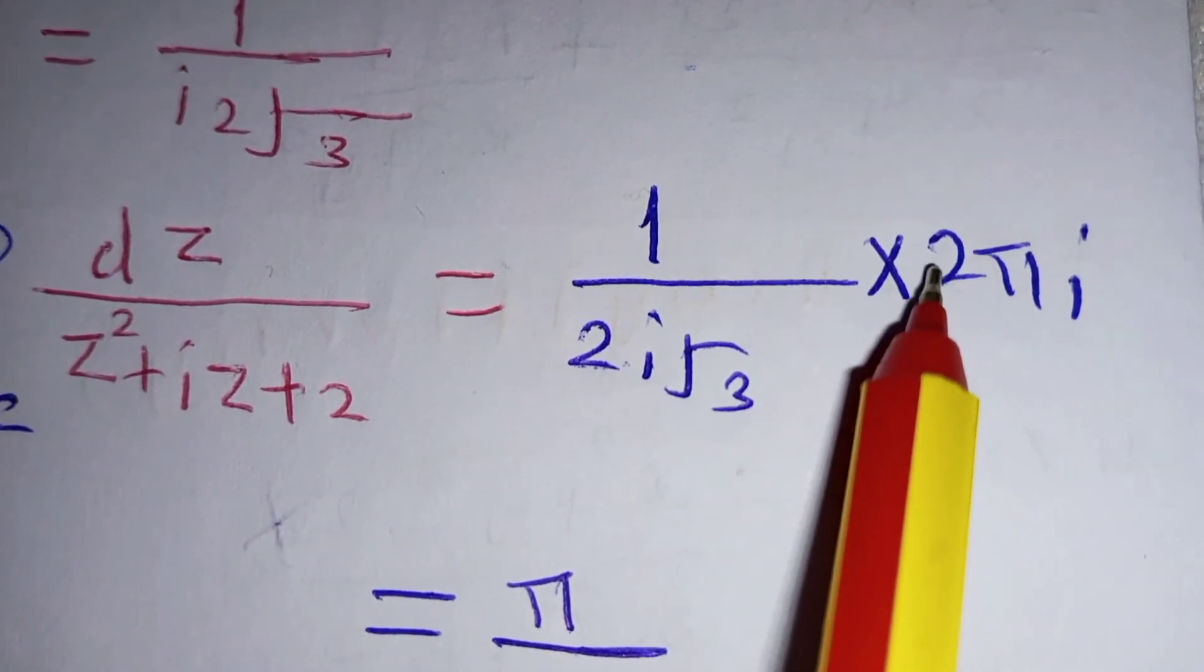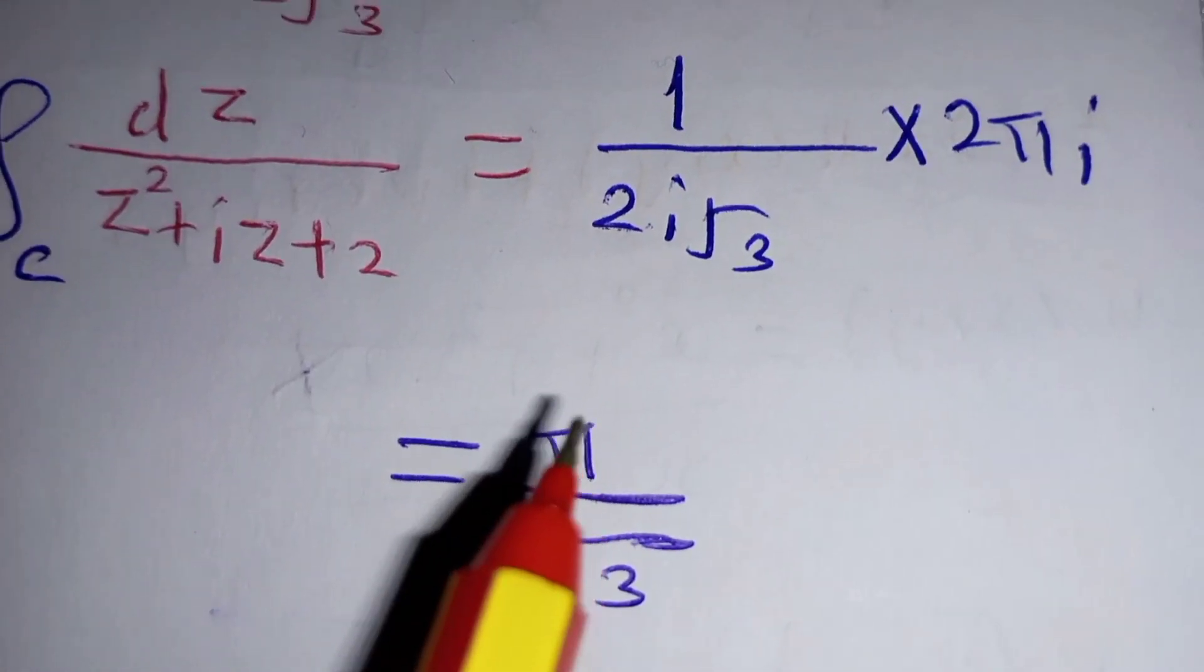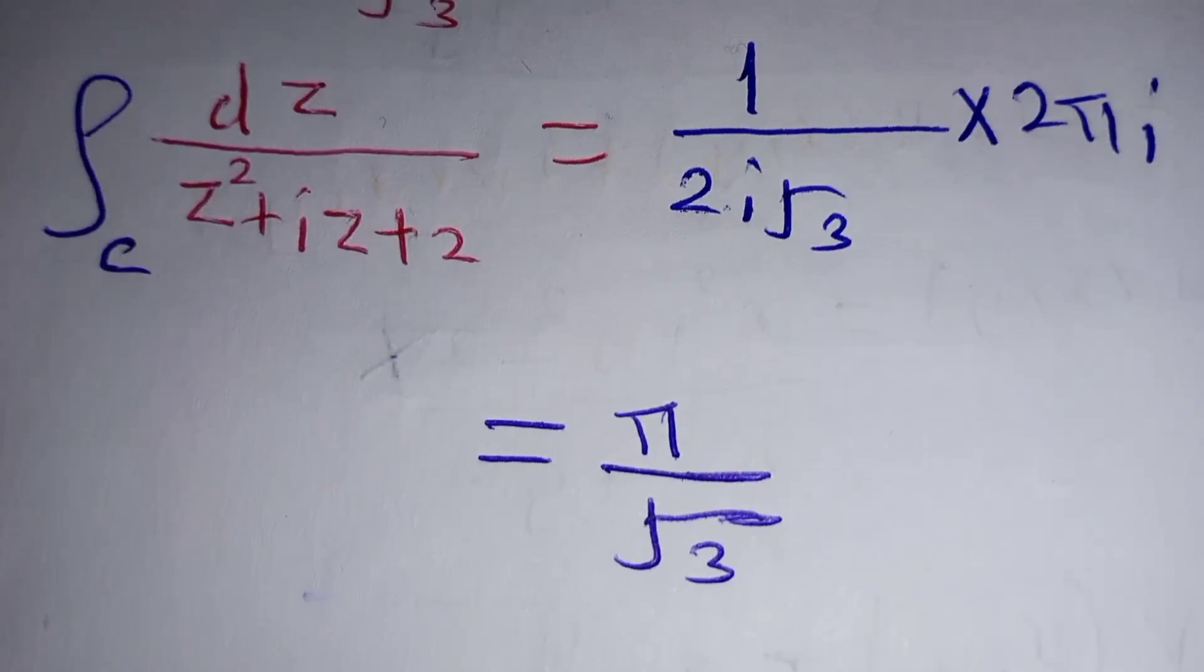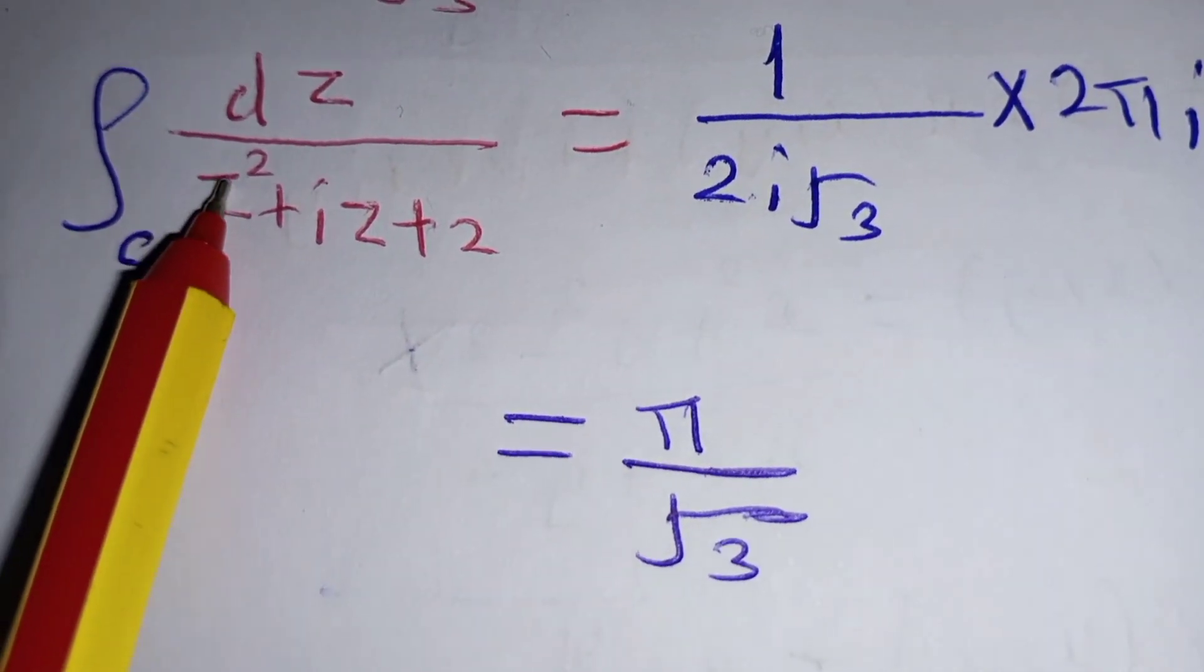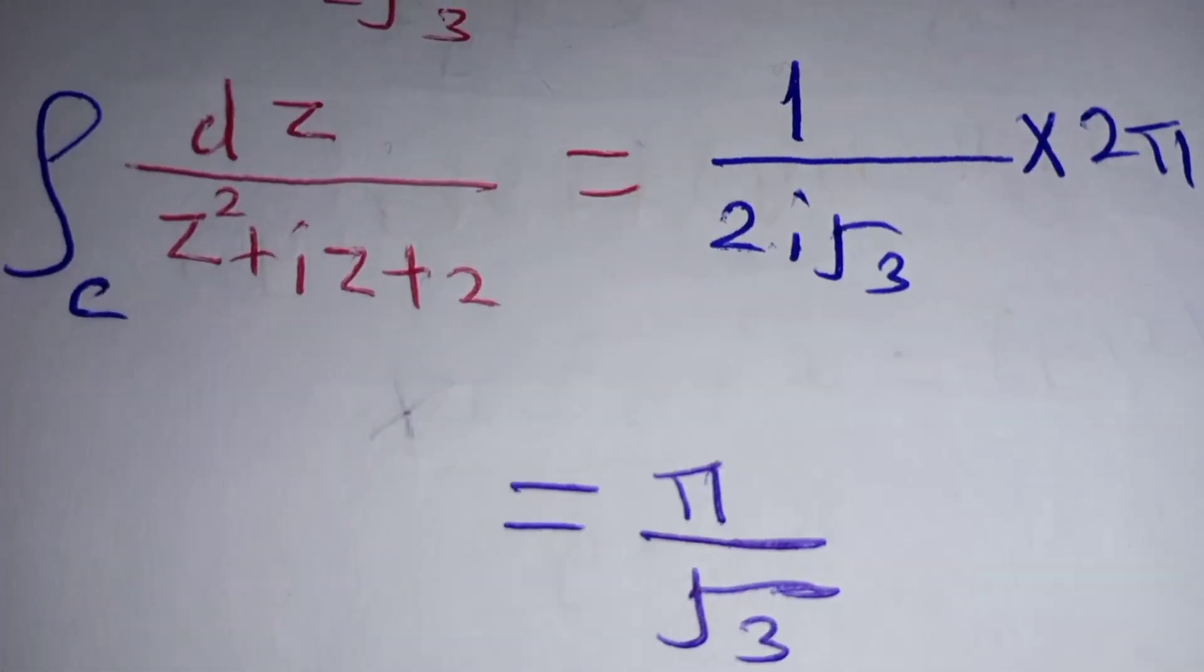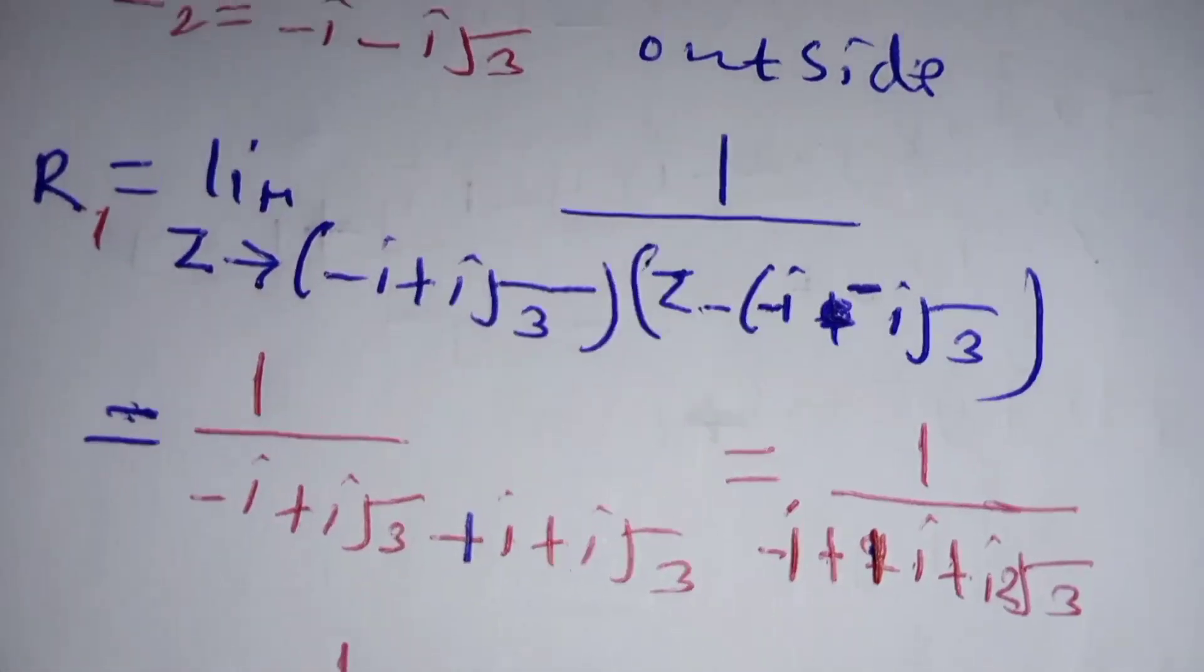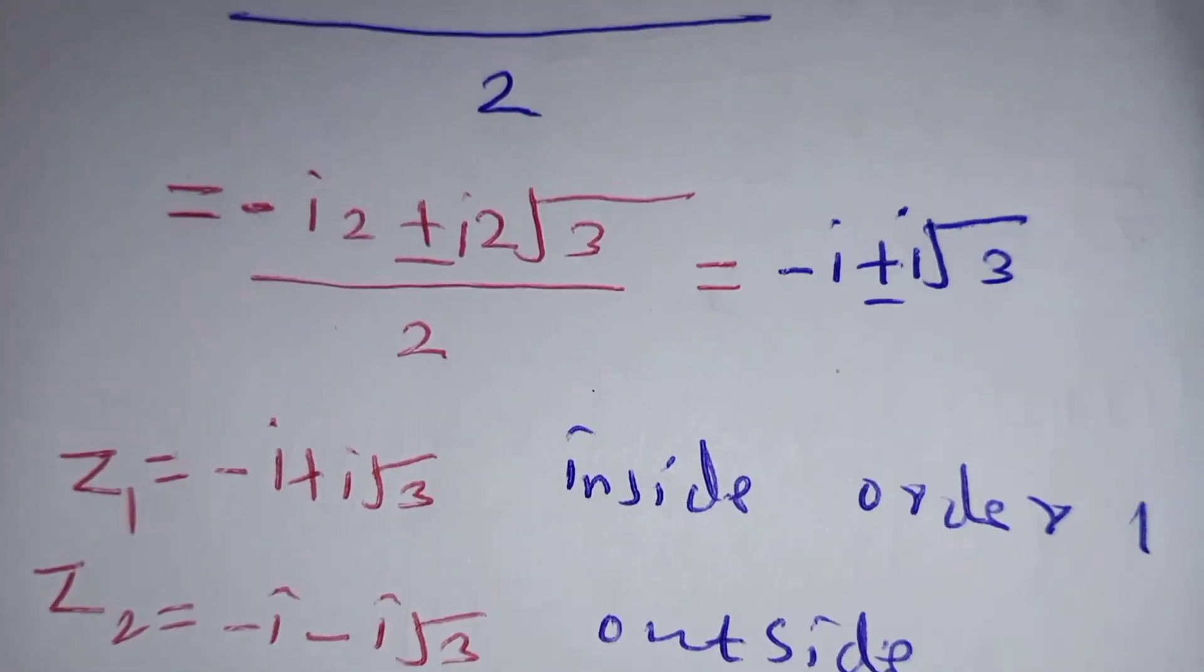Where you have z, you substitute with negative i plus i root 3. Then you remove the bracket where you have i to become positive i plus, and this minus and minus will become plus i root 3.